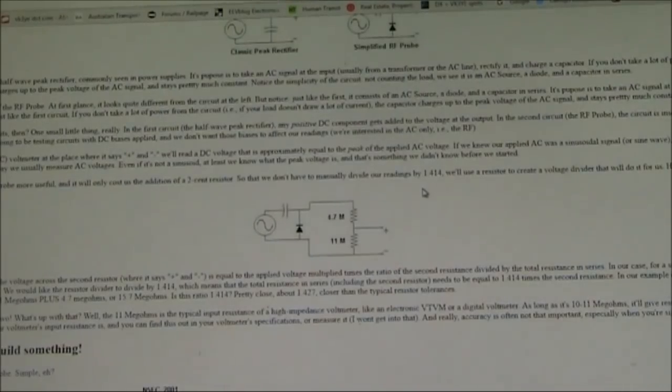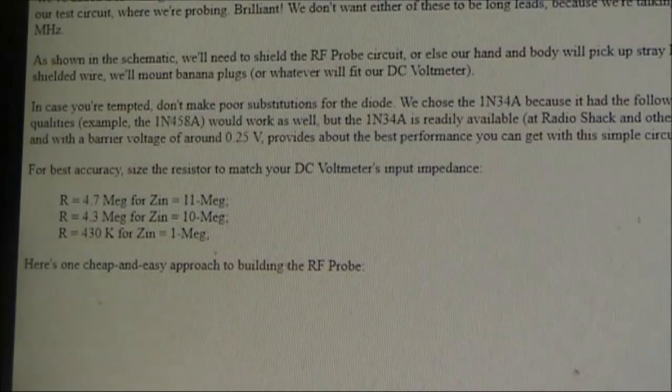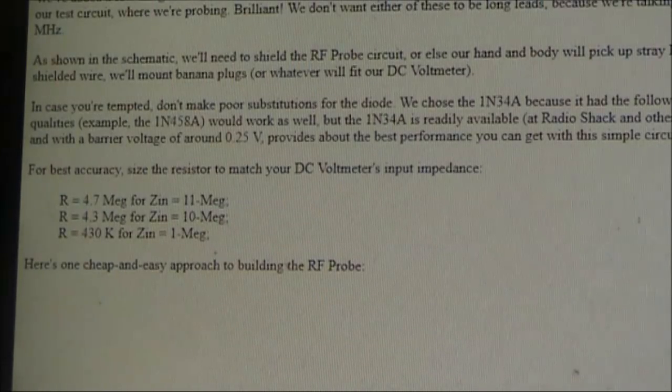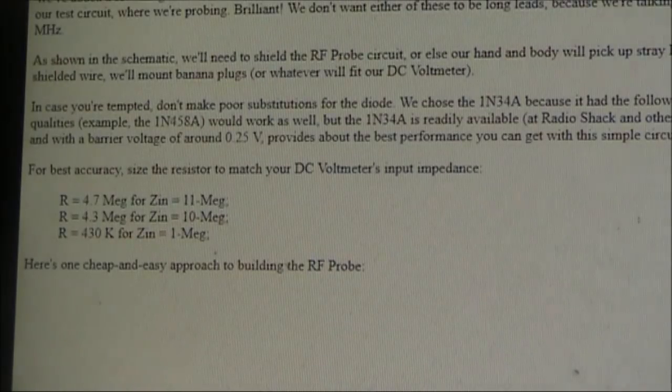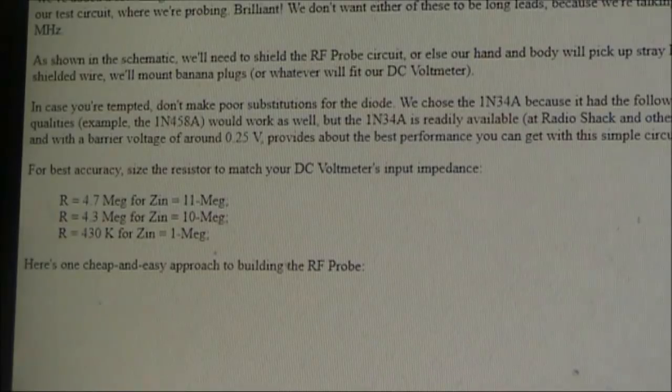A diode probe reads peak values. If you want to convert it to RMS, you need to divide its readings by 1.414. You can do that with a voltage divider explained here. The only problem is that you need to know the input impedance of your multimeter. If you don't, then the readings aren't going to be accurate. How do you find that out?